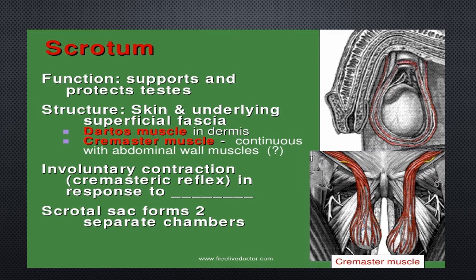The cremaster muscles are paired — there are two of them, one on each side. The dartos muscles are smooth muscles. These structures produce involuntary contraction through the cremaster reflex in response to temperature changes.